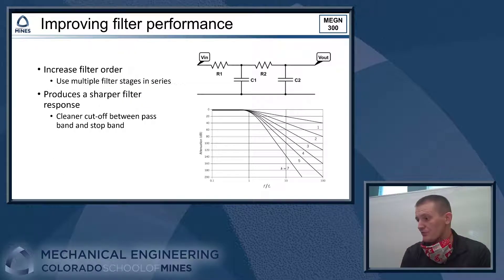If you want to improve your filter's performance, if you want to have a sharper transition between the pass band and the stop band, what we can do is we can increase the filter order. The easiest way to do this with an RC filter is we call it cascading stages of the filter together. So we just build copies of the filter and use them in series. And what you get with that is you get a cleaner transition between the stop band and the pass band. So you get a sharper cutoff. So you get less noise going through your signal that way.